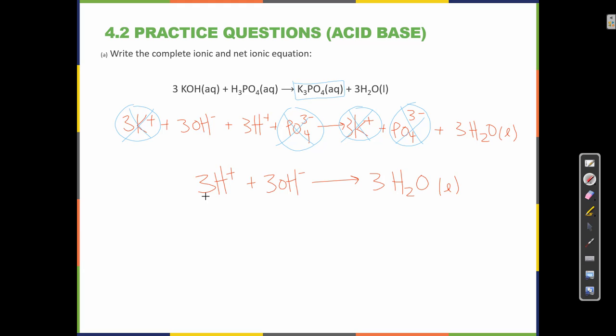When I look at my net ionic equation, I have a 3 to 3 to 3 ratio, and those numbers can get smaller. When I'm left with this situation, I have to reduce those numbers. If I divide all of them by 3, then I have 1H+ plus 1OH- makes 1H2O liquid. This would be the net ionic equation.